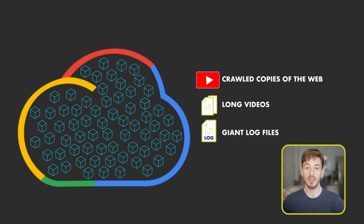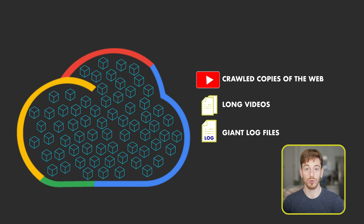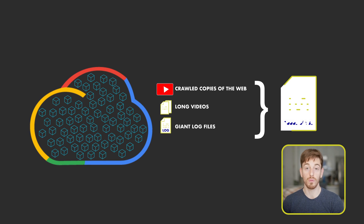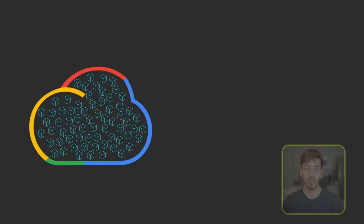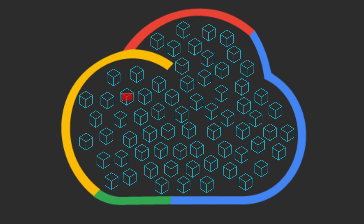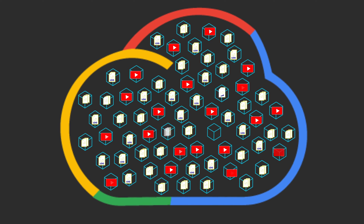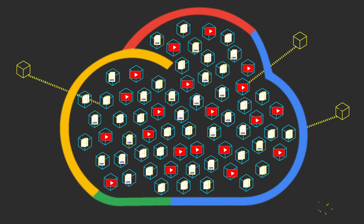These often need to be accessed for analysis or to perform a computation. Since they are so big, to process them in parallel, GFS breaks down files into chunks and distributes them across many machines, so all the different ranges of the file can be accessed by multiple machines at the same time.